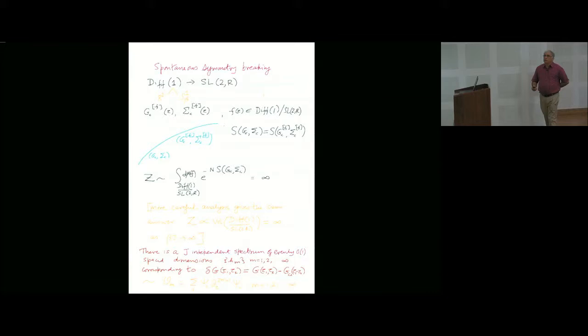Here is a picture. What you have basically is your classical solution, and this is the orbit of DIF1. Clearly the action is invariant under this, is constant on this orbit. That leads to a problem because if you integrate now over this symmetry, you essentially encounter an infinity coming from the volume of this. A more careful analysis actually leads to the same result, that in the limit when beta j is really infinite, this partition function is also infinite.